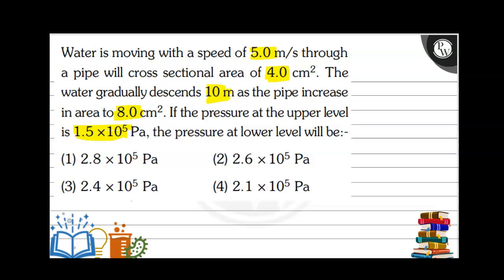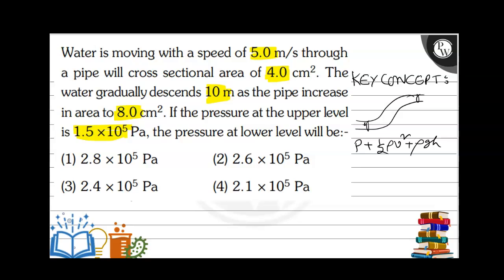The pressure at the lower level will be — the key concept involved is Bernoulli's theorem. For a pipe having different heights and different areas of cross-section, the sum of three quantities is always constant at any point: first, pressure; second, kinetic energy per unit volume, that is half rho v squared; and third, potential energy per unit volume, that is rho g h.